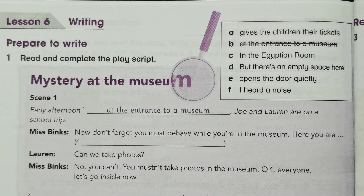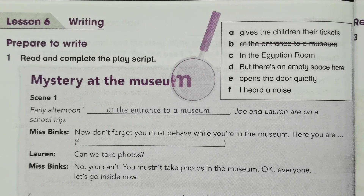Okay pupils, we are on the Year 6 academic science book on page 108. We are on Unit 10, Lesson 6 — Writing. Prepare to write, Activity 1: read and complete the play script 'Mystery at the Museum.'